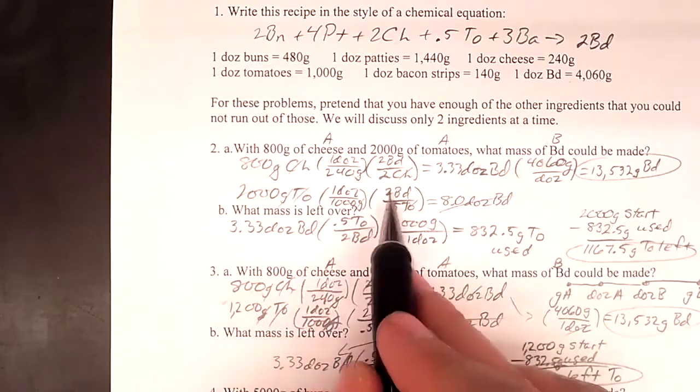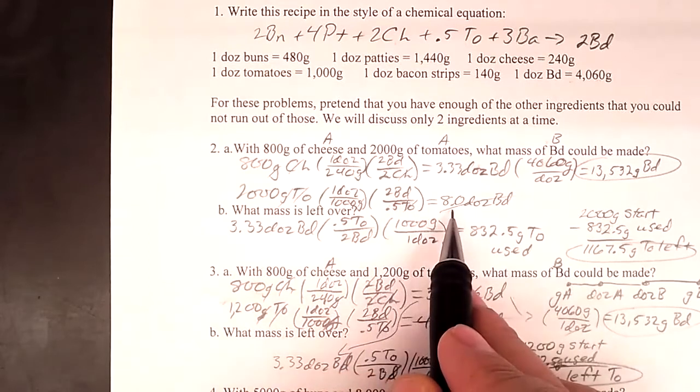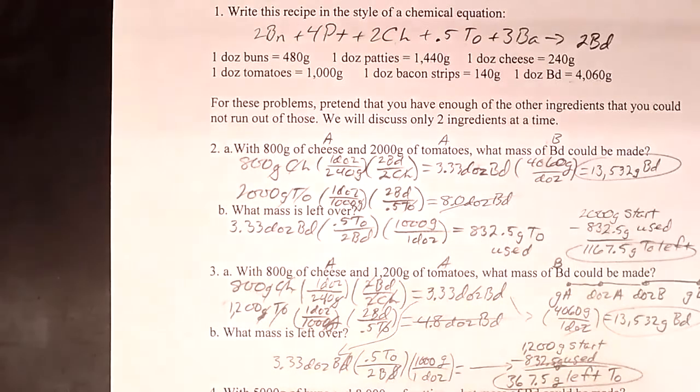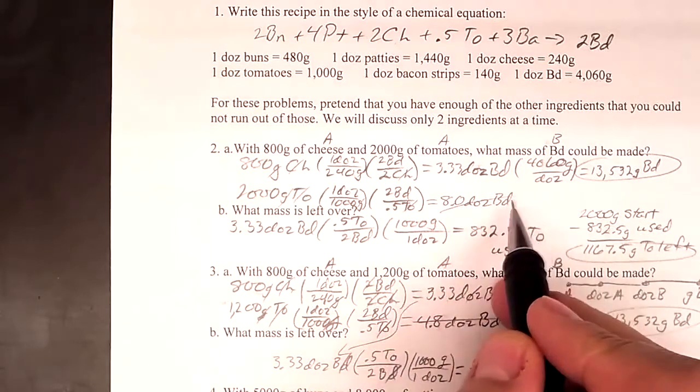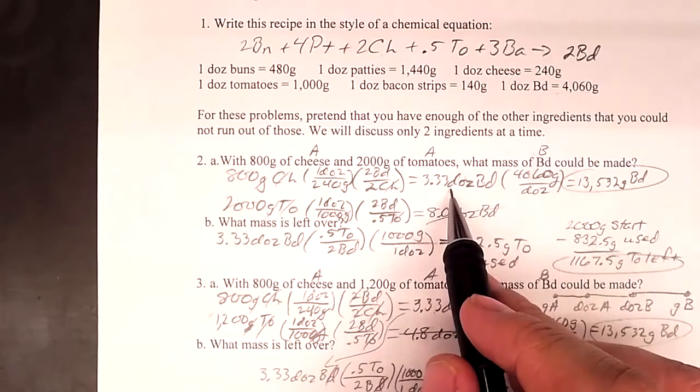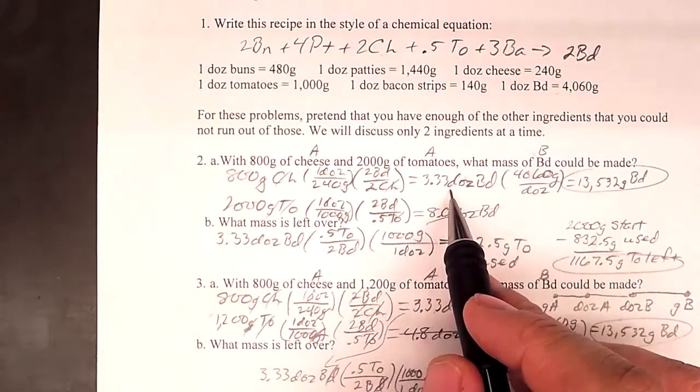So 2,000 divided by 1,000 times, remember this is four, gives me eight dozen bacon double cheeseburgers possible. Well, they can't both be possible. And we said the small number is the correct one. The big number is impossible. So I scratched that out, so I won't use it. This one's possible. So assuming that I did everything correctly, this is how much I would make.